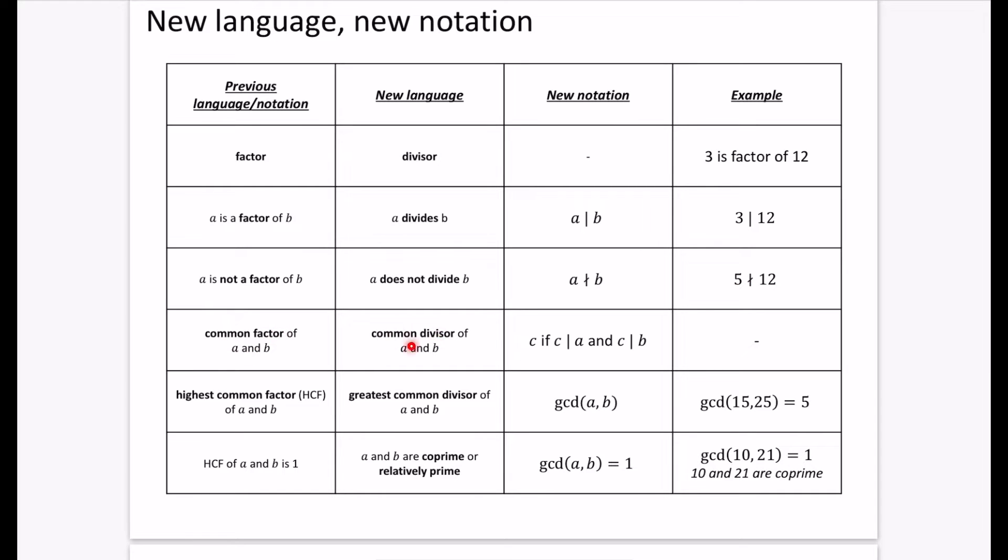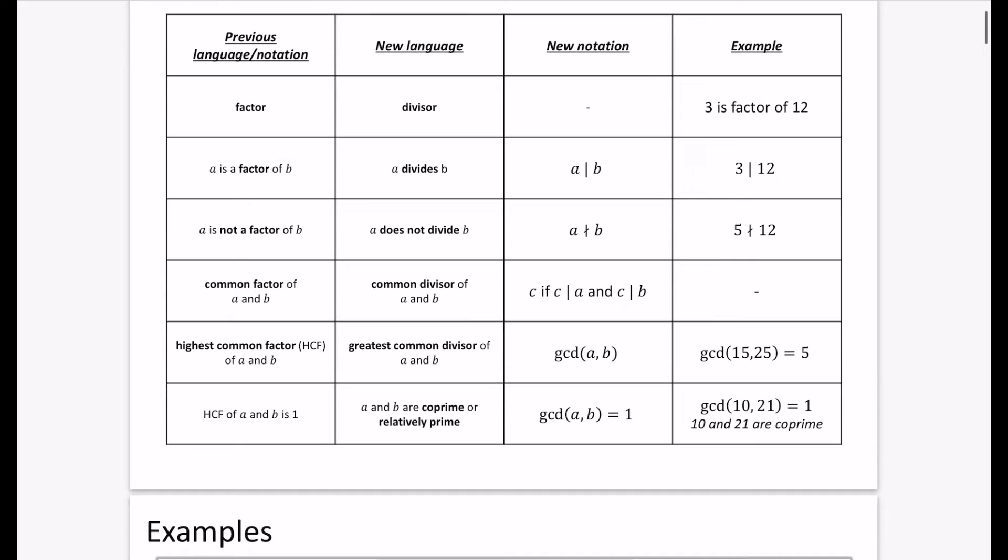Now, common factors of a and b, we would now call that a common divisor of a and b. So we could say that the notation could be c as the common divisor, because if c divides a and c divides b, then c is a common divider of a and b. And I didn't bother putting an example with this one.